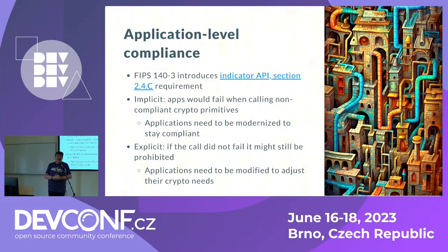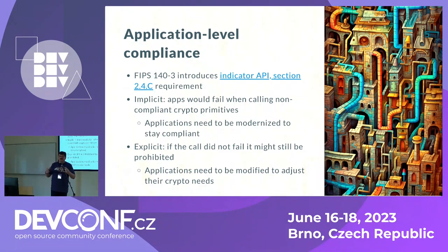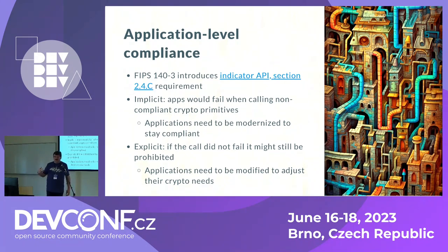Not all modules have implemented the indicator API yet. NSS has merged this API; for OpenSSL the discussion is still open on how it should look and be used. There are concerns that existing applications might fail simply because they're not prepared to query this additional information. If something fails implicitly, you bail out early and see the problem — you cannot log in over SSH and that's all you get. But for the explicit indicator, the application needs to be modified and have knowledge of the API to call.